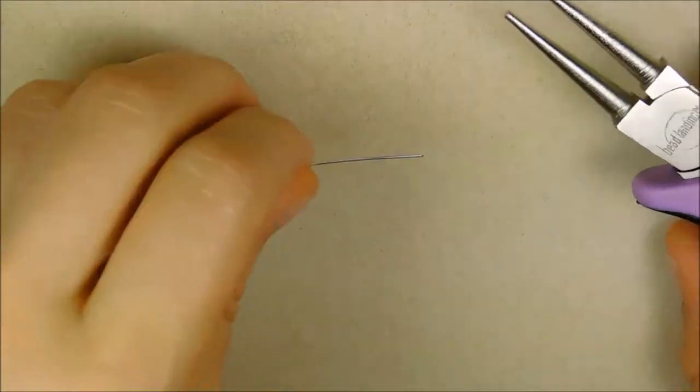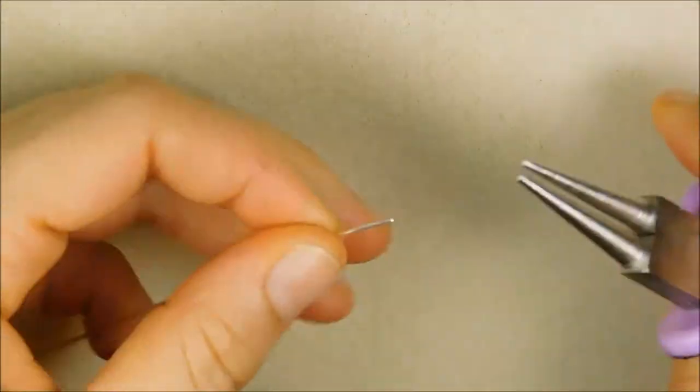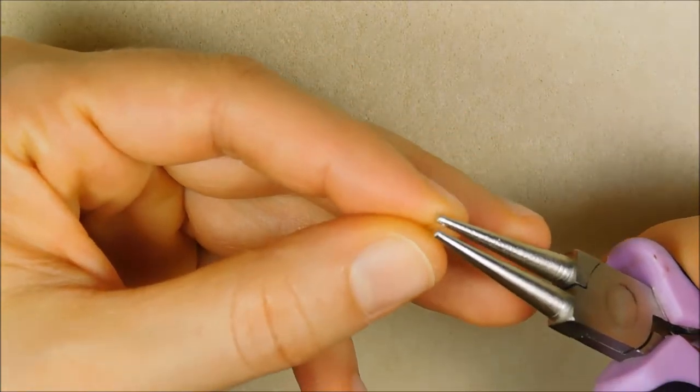So let's begin with the half scribble. Form a basic loop at the very end of the 5 inch length of wire.